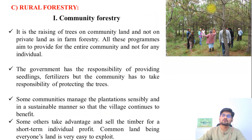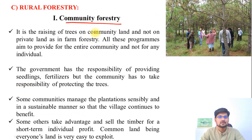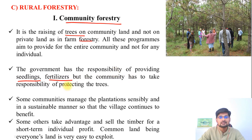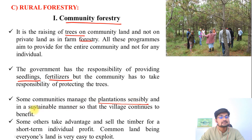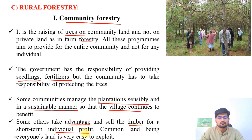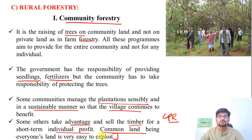Rural forestry is the third part of social forestry, and under it we have the divisions. One is called community forestry — where rural communities are used for raising trees — and the government has the responsibility of providing facilities like seedlings, fertilizers, and soil pH measurement, while the responsibility of protecting the trees is given to the community. Some communities manage the plantation sensibly and sustainably so the village continues to enjoy benefits, but some others sell timbers for short-term individual profit. Common property resources (CPR) — being everybody's land — are very easy to exploit since everybody has an equal right on them.